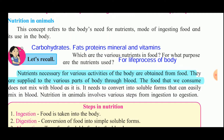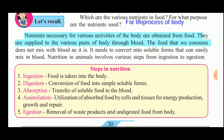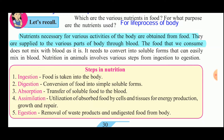The second question is: for what purpose are the nutrients used? These nutrients are used for the life processes of the body. The nutrients necessary for the various activities of the body are obtained from food and are supplied to various parts of the body through blood. The food that we consume does not mix with the blood as it is — it needs to be converted into soluble forms that can easily mix in blood.